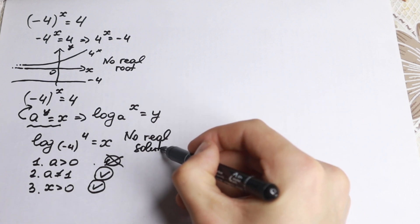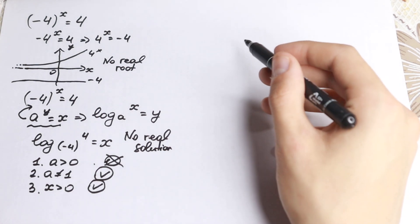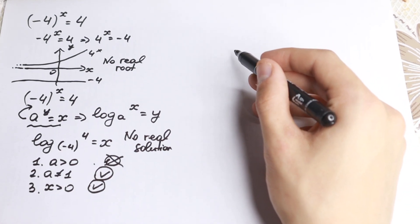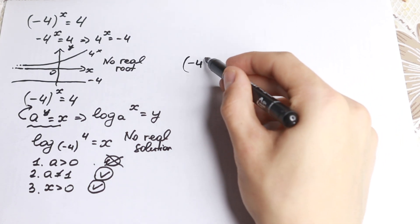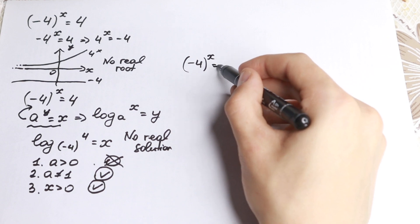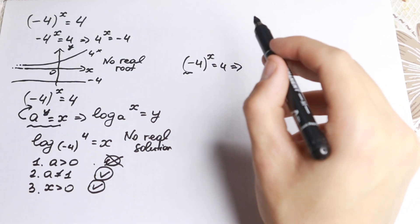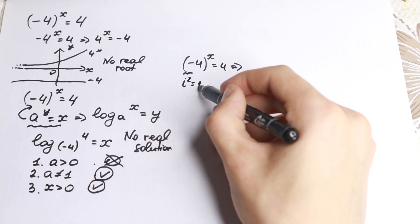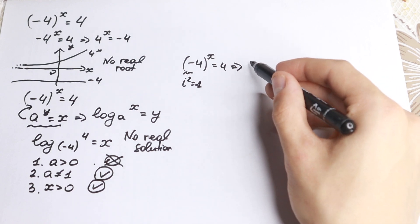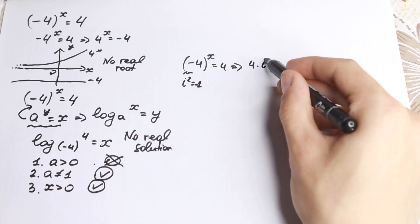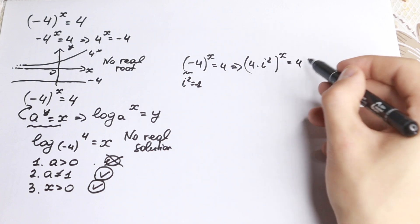So now we are only left with complex roots. Let's try to solve it. We have minus 4 to the power x equal to 4. We know that i squared equals minus 1, so let's replace the minus with i squared. As a result, we get 4 times i squared, all to the power x, equal to 4.